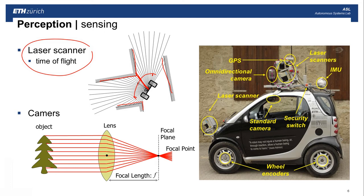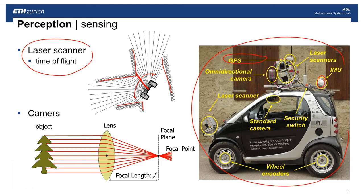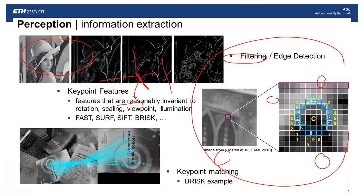Cameras are today extremely well used — they are cheap and give very rich information about the environment. On the other side, cameras are not active sensors, so they typically have a poor signal-to-noise ratio and you have to extract information on different levels. Apart from these main sensors, you might also have a GPS sensor for global localization, an IMU providing angular rates and accelerations, and proprioceptive sensors measuring the wheel speeds of the robot.